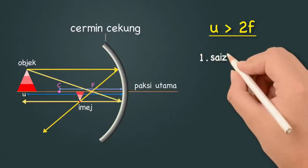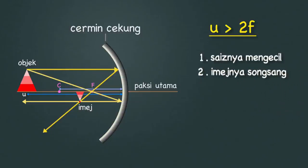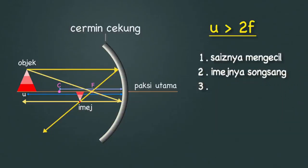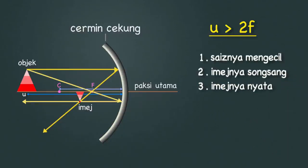Lihat saiznya, ia semakin mengecil. Imej ini juga berada dalam kedudukan song sang. Imej yang song sang ini juga mempunyai ciri lain yang dipanggil imej nyata. Jadi, ciri-ciri imej yang terbentuk pada kedudukan U lebih besar dari dua F adalah mengecil, song sang dan nyata.